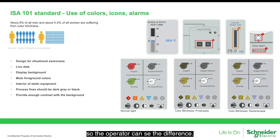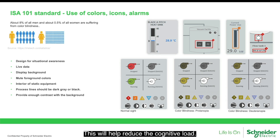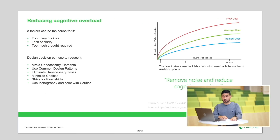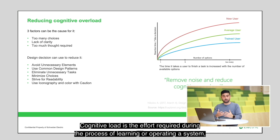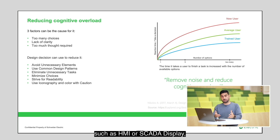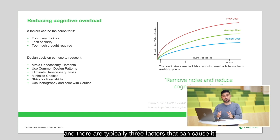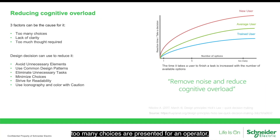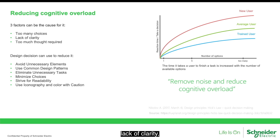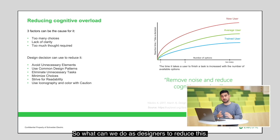Remember to provide enough contrast between foreground and background so the operator can see the difference — this will help reduce cognitive load. Cognitive load is the effort required during the process of learning or operating a system such as an HMI or SCADA display. There are typically three factors that can cause it: too many choices are presented to an operator, lack of clarity, and too much thought required to solve a task.